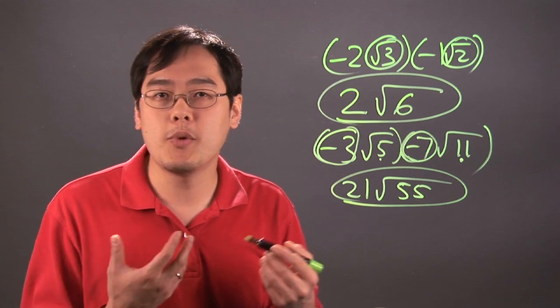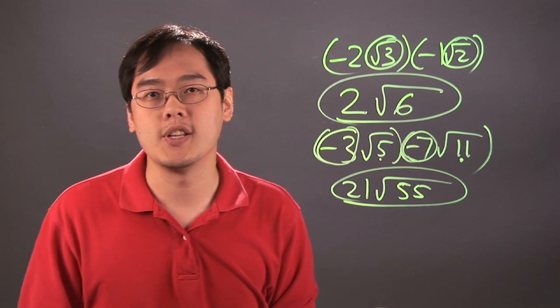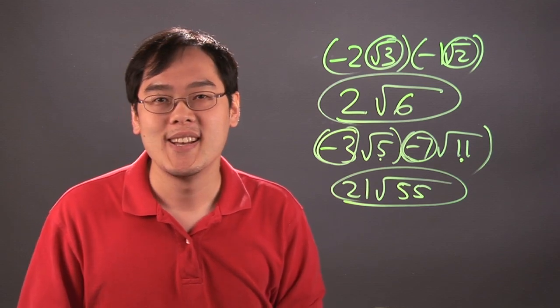So the bottom line is when you multiply two negative square roots together, multiply the exterior terms and then you multiply the interior terms and you'll be good to go.